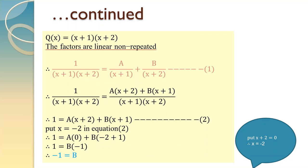Observe the denominator Q of x. It is equal to x plus 1 into x plus 2. It is the product of two linear factors. Why linear? Because the power of x in both of them is 1. And x plus 1 is different from x plus 2, so they are not repeating. Hence the type is linear non-repeated.